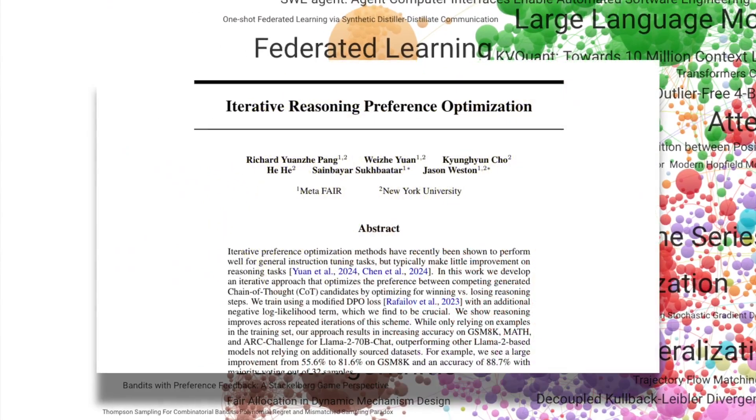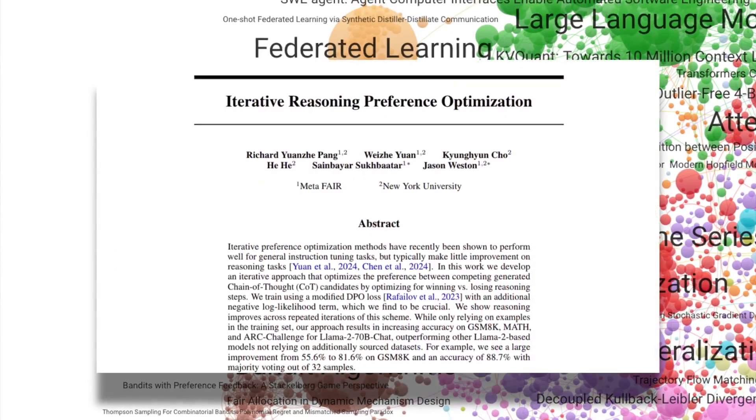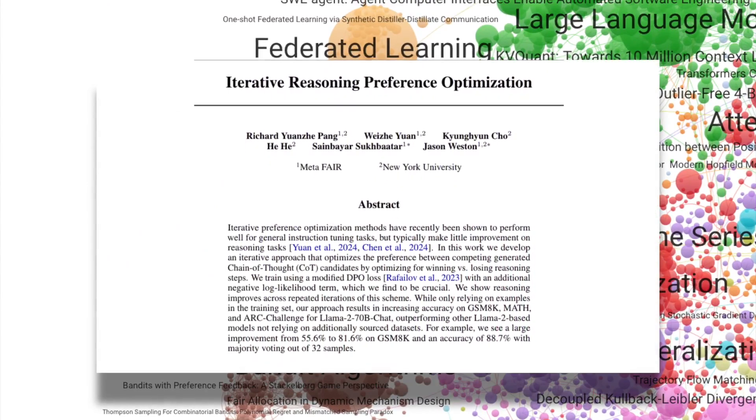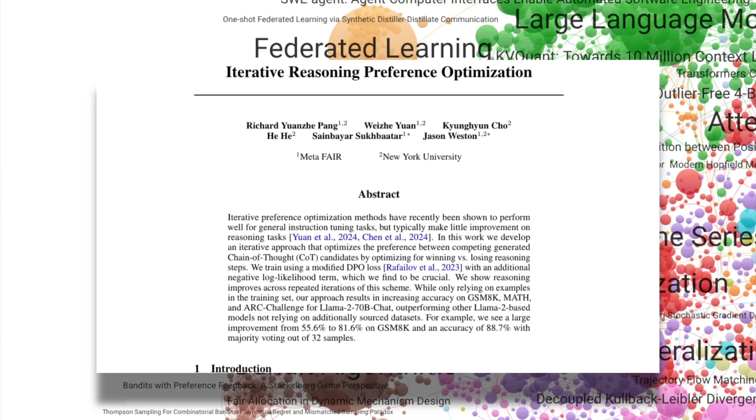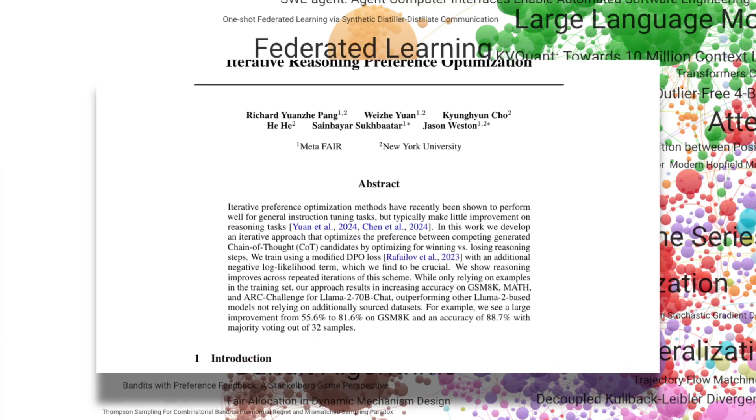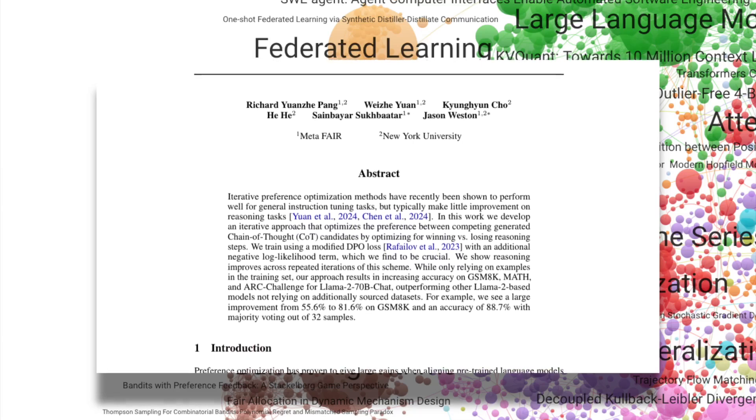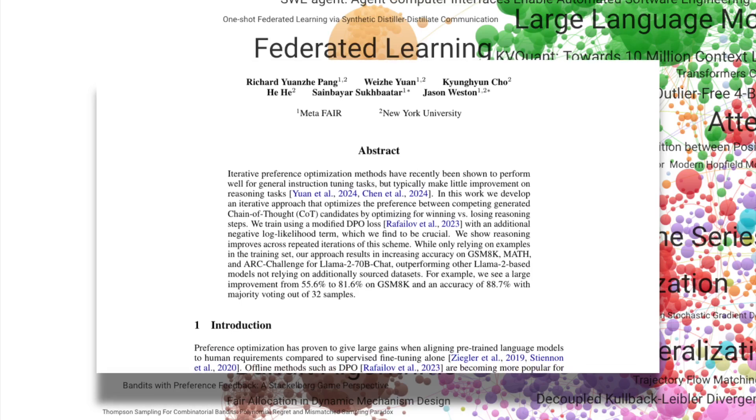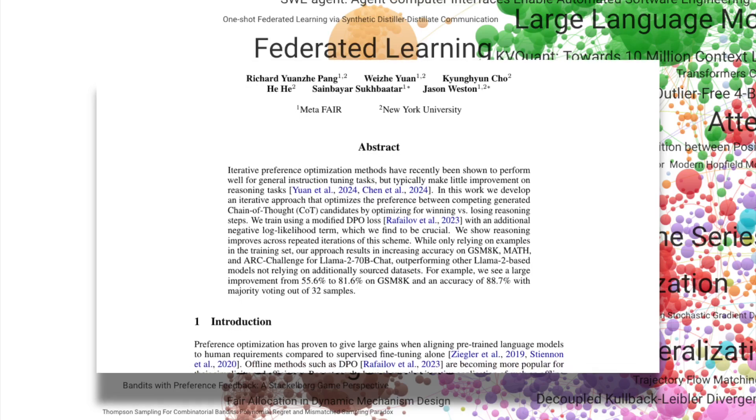Finally, a new method for iterative reasoning optimizes chain-of-thought preferences, using a refined DPO loss function with an additional negative log likelihood term. The approach significantly boosts accuracy on reasoning benchmarks like GSM8K and math, outperforming other Llama 2-based models.